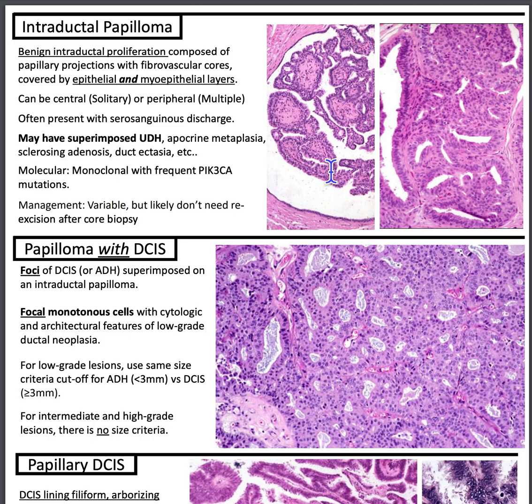So let's begin. Intraductal papilloma is a benign intraductal proliferation composed of papillary projections with fibrovascular cores covered by epithelial and myoepithelial cells. They can be central, in which case it's oftentimes solitary, or peripheral, in which case it's multiple. Clinically, a woman might present with serosanguinous or slightly bloody discharge.